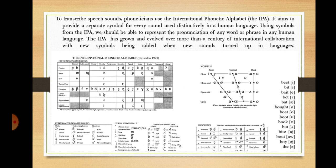Now you will get acquainted with the notion of the IPA. To describe speech sounds, phoneticians use the International Phonetic Alphabet, or IPA. It aims to provide a separate symbol for every sound used distinctively in a human language. Using symbols from the IPA, we should be able to represent the pronunciation of any word or phrase in any human language. The IPA has grown and evolved over more than a century of international collaboration, with new symbols being added when new sounds turned up in languages.